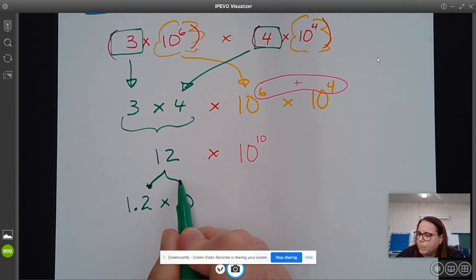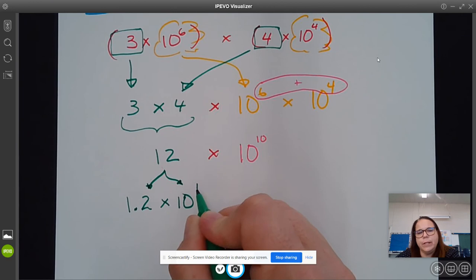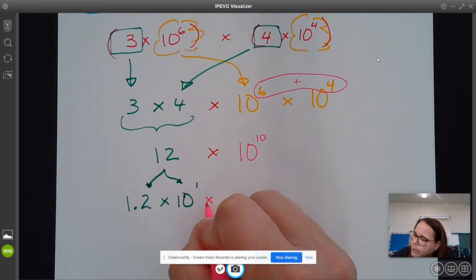1.2 times 10 is 12. So we can change 12 into 1.2 times 10, because those two things are equal. They are the same thing. I'm going to put an exponent of 1 on the 10. It's there, but we're going to use it here in just a second. We want to be able to see that. And then 10 to the 10th.